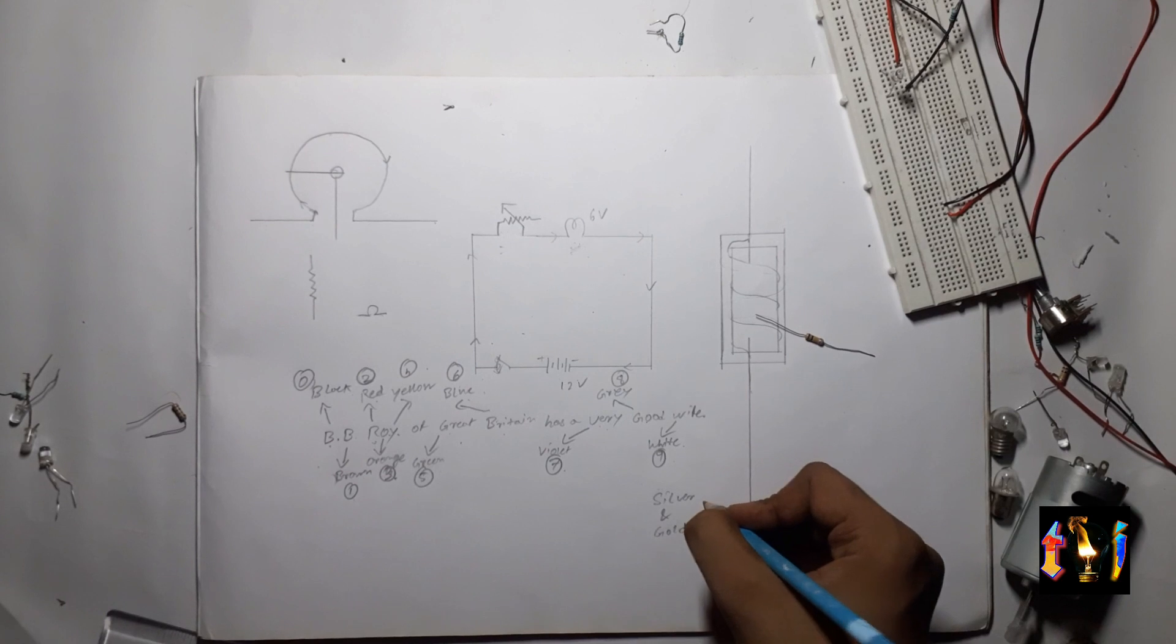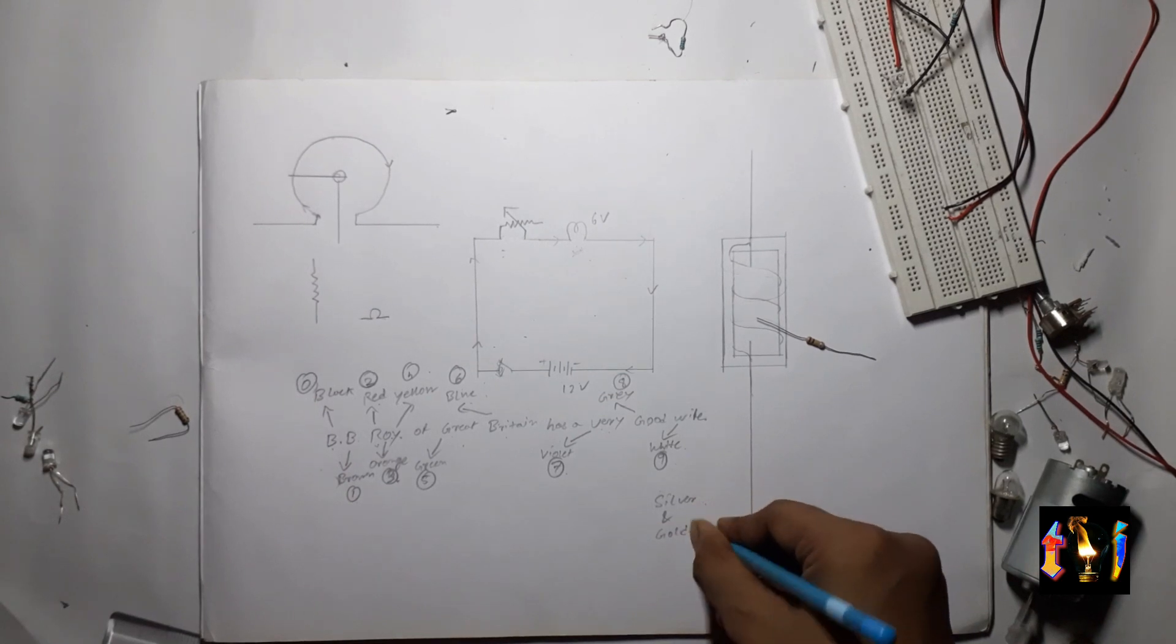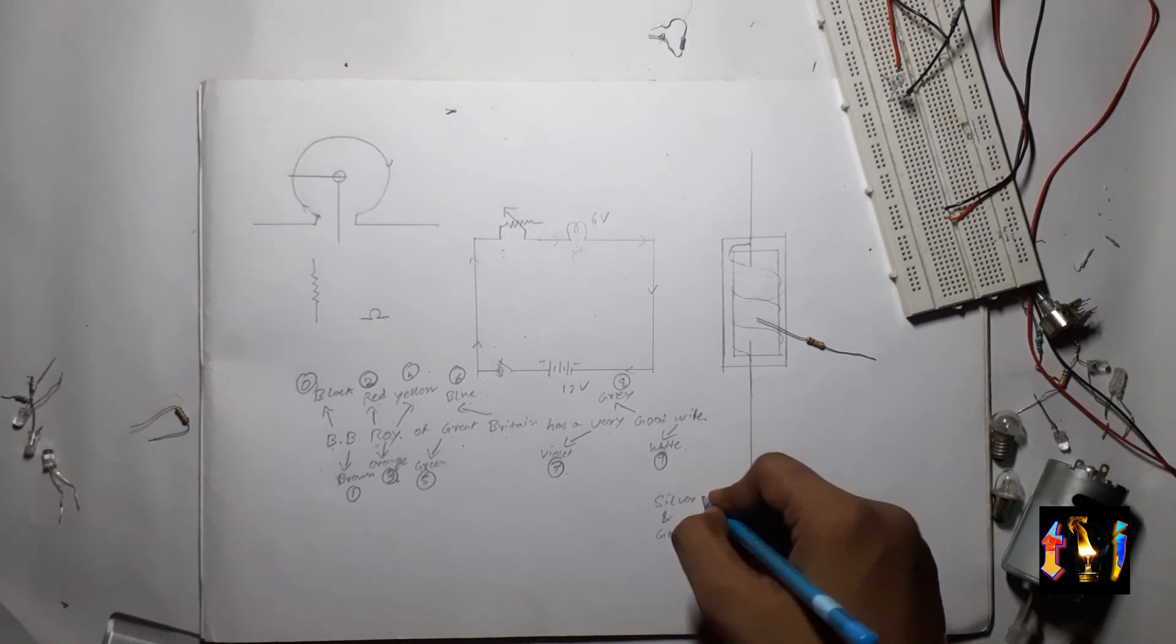And for the fourth ring there are two colors only, silver and gold. If on any resistor there is gold ring that means the resistance tolerance will be plus minus 5 percent and if there is a silver ring it will be plus minus 10 percent.